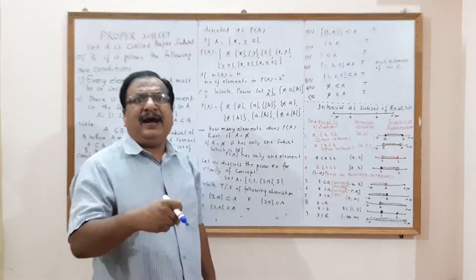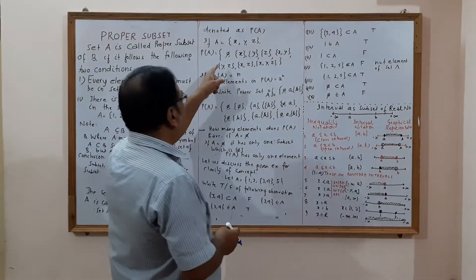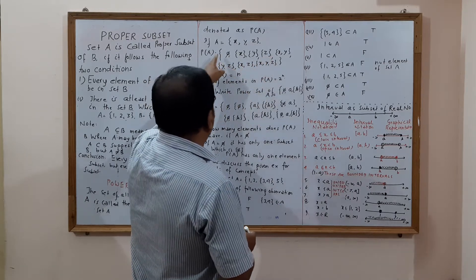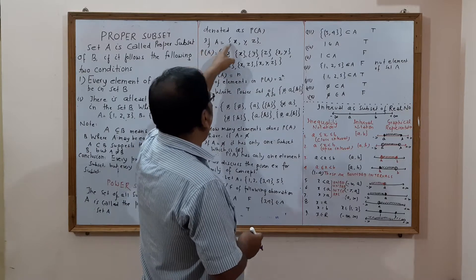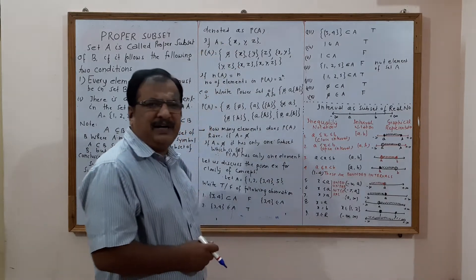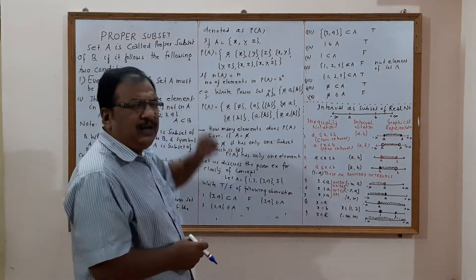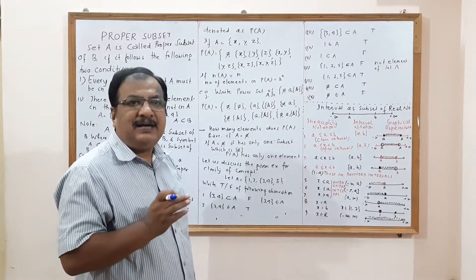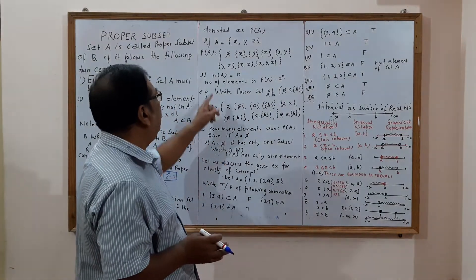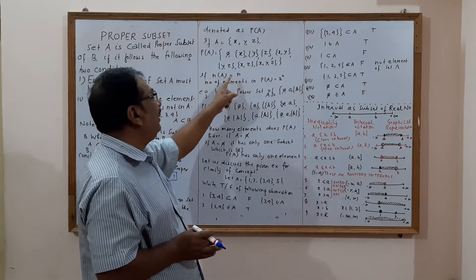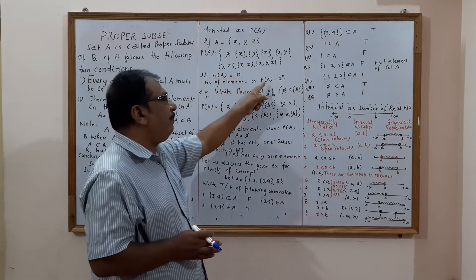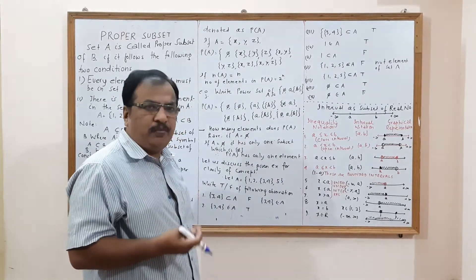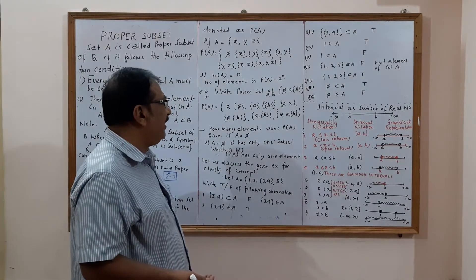We include all these subsets within curly braces. So the power set of A becomes: P(A) = { ∅, {x}, {y}, {z}, {x,y}, {y,z}, {x,z}, {x,y,z} }. If the number of elements of A is N, then the number of elements in the power set of A is 2^N.